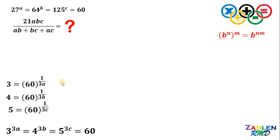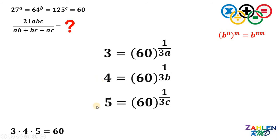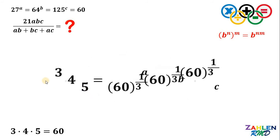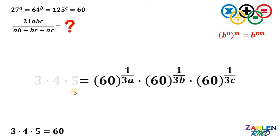Now, at this point, let's focus on these three results. Notice that 60 is just 3 times 4 times 5 — 3 times 4 is 12, times 5 gives us 60. And on the left-hand side of our equations, we have 3, 4, and 5. So what we're going to do is multiply these three equations. We get 3 times 4 times 5 equals 60 raised to 1 over 3A, times 60 raised to 1 over 3B, times 60 raised to 1 over 3C. And we know 3 times 4 times 5 gives us 60.